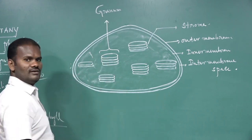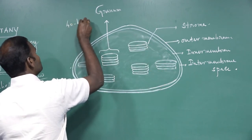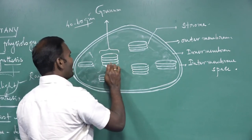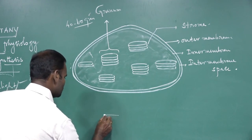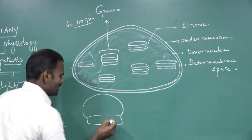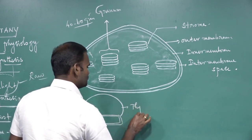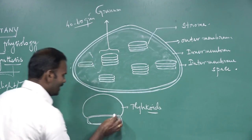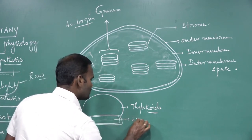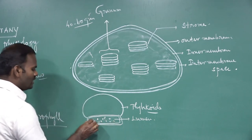This total structure is called a granum. Each chloroplast is composed of 40 to 60 grana. Each granum is made of disc-shaped lamellae called thylakoids. The thylakoids are enclosed by a membrane, and the space enclosed by that membrane is called the lumen, which contains the chlorophyll pigment or photosynthetic pigment located in the lumen of the thylakoids.